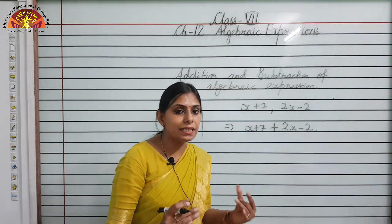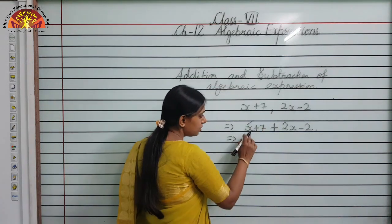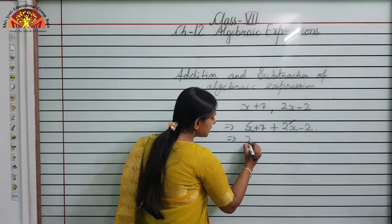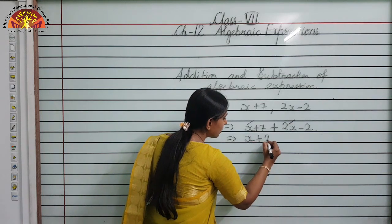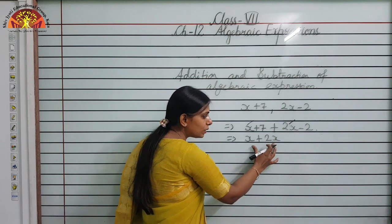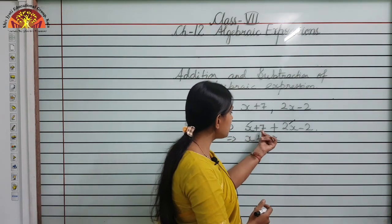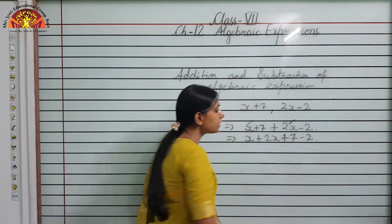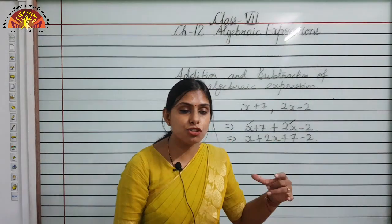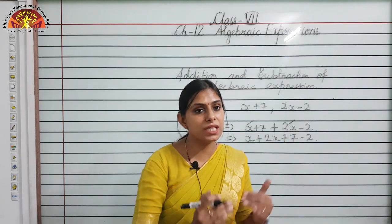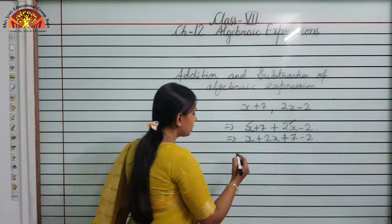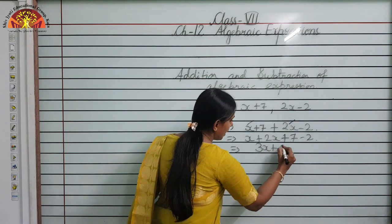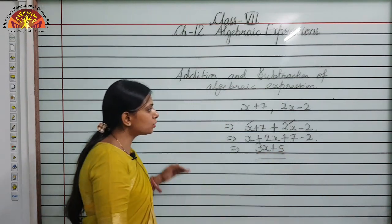Collecting like terms: x and 2x are like terms, and 7 and −2 are constant terms. So we write x plus 2x, plus 7 minus 2. Therefore x plus 2x is 3x, and 7 minus 2 is 5. The answer is 3x plus 5. This is how you add two algebraic expressions.